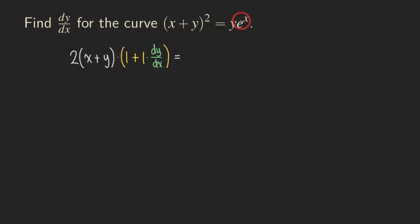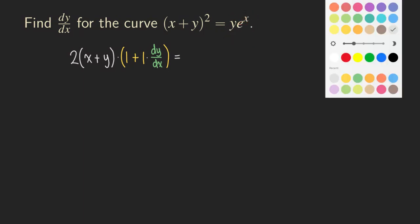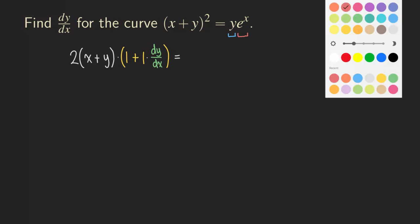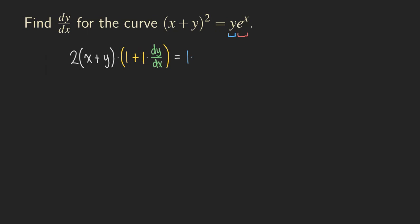When we differentiate this product using the product rule, we are going to differentiate just the first function and not touch the second. It's a good idea to highlight the functions first. We say that y is the first function and e to the x is the other function. So first, differentiating y gives us 1 times dy/dx.